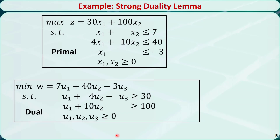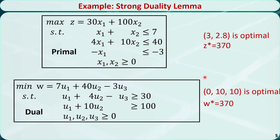Let's check this example again. For the primal, the optimal solution is the point (3, 2.8). We plug these values into the objective function, and z* equals 370. For the dual, the optimal solution is the point (0, 10, 10). We plug these values into the objective function, and w* equals 370. In this example, z* equals w*. We can also check the primal and dual of other linear programming problems — they should all follow this rule.